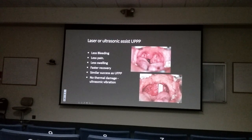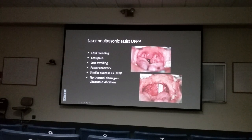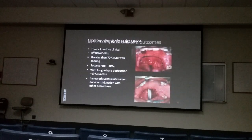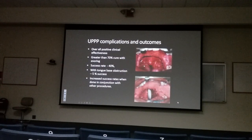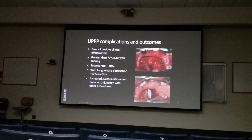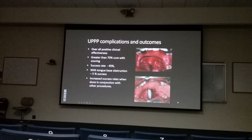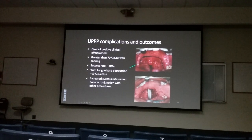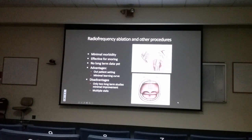For tongue-based obstruction, UPPP alone doesn't work well — and tongue-based obstruction is common in severe sleep apnea patients. Some providers have tried soft tissue sclerosing injections called pillar implants to stiffen the palate, but the success rate is very low. It may reduce snoring but doesn't treat sleep apnea, and there are no long-term studies supporting it.